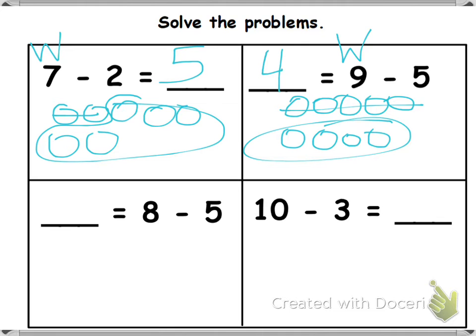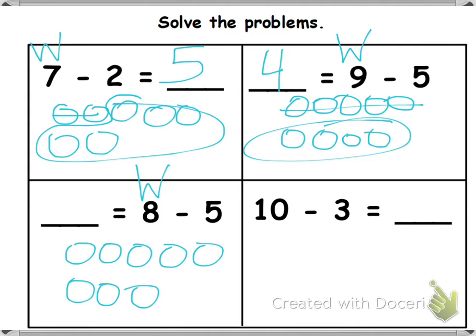Blank equals 8 minus 5. What is my whole? 8. Let's draw 8. Take away how many? 5. Cross that many out. Circle the rest. How many is left? 3.